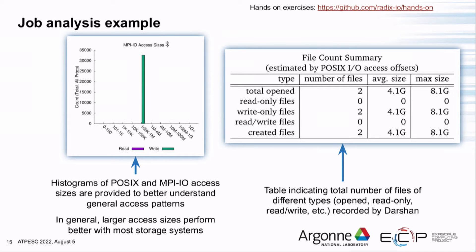The access size histogram for the MPIO module shows the full range of accesses and the total count of different access sizes your application issues. Parallel file systems really prefer big access sizes, so small access sizes towards the left of the histogram are something to watch for. You'd prefer to see the majority of your accesses in the megabyte or more range.